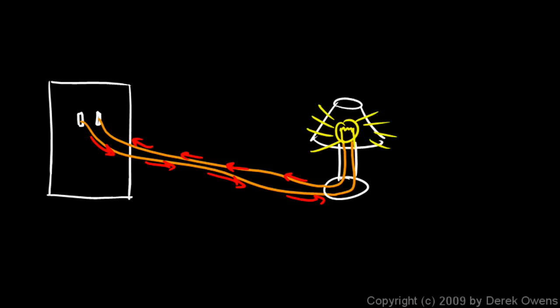But what happens is, the electrons on one side of this outlet are at a higher potential energy than they are on the other, and they flow from a point of higher energy to a point of lower energy.